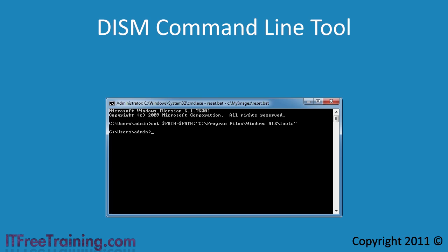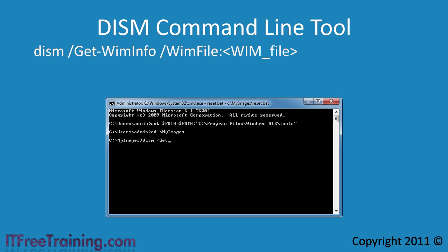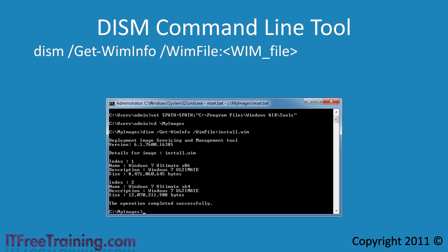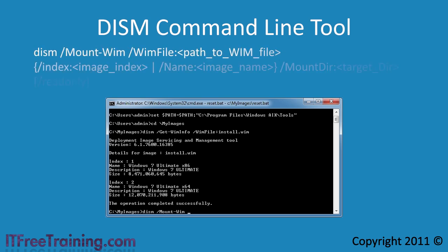The first thing I need to do is find out the index number for the image I want to modify. Remember that one WIM file can contain many different images. To do this I run the command DISM with the switch GET-WIMINFO. Next I need to specify the file location with the WIM file switch to select an image. In this WIM file there are two images — both are Windows 7 Ultimate but one is for 32 bit and the other is for 64 bit. Before I can make changes to an image I need to mount it. To mount the image I use the switch mount-WIM. Next I need to enter in the file name of the WIM file and finally the index. In this case I want the 64 bit image so I will enter in the index number of 2.